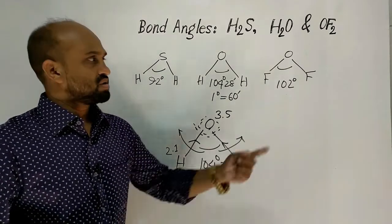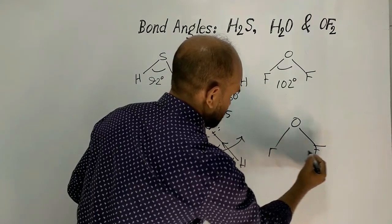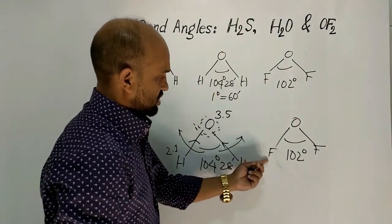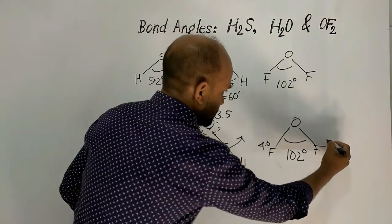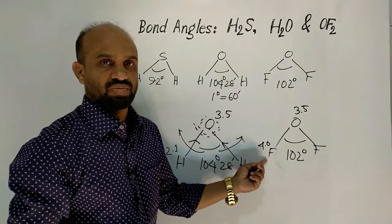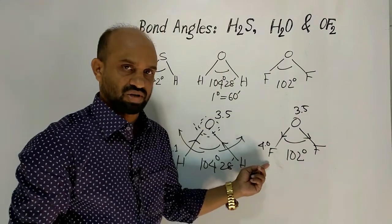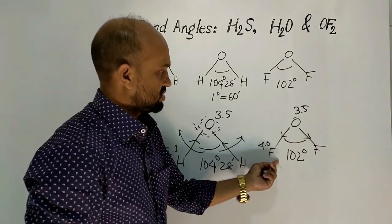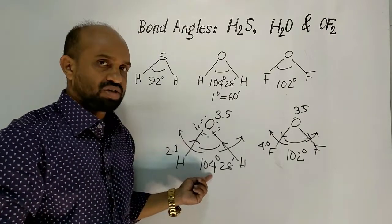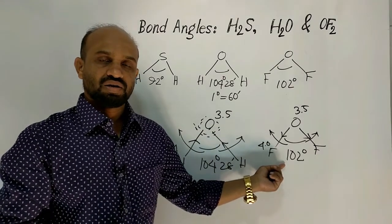Now let's see the bond angle in oxygen fluoride. In oxygen fluoride, the bond angle is 102 degrees. The electronegativity of fluorine is 4.0 and oxygen is 3.5. Since fluorine is more electronegative than oxygen, the covalently bonded electrons move towards fluorine. So there is no chance for this bond angle to expand, which is why the degree of bond angle in water is higher than the degree of bond angle in oxygen fluoride.